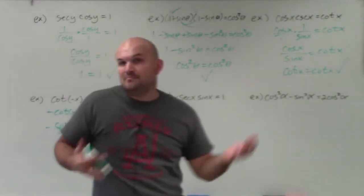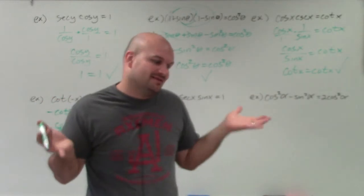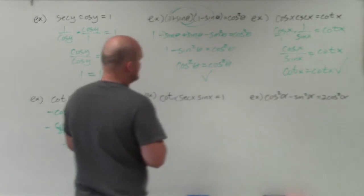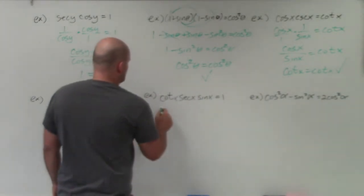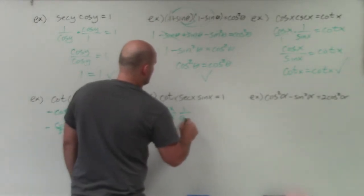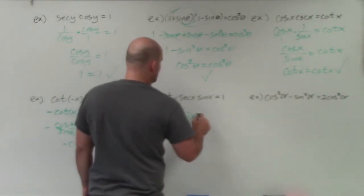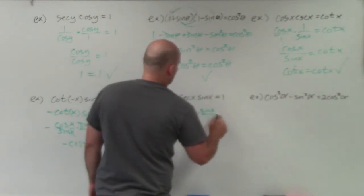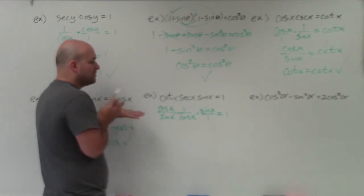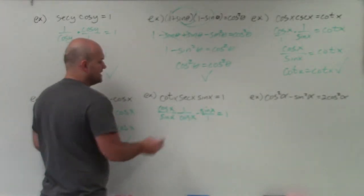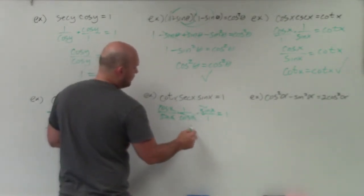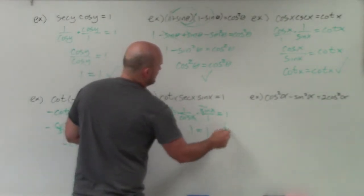In the next example, we have three terms — don't let that mess you up. Just rewrite all three in terms of sines and cosines. So we have cosine of x over sine of x, times 1 over cosine of x, times 1 over cosine of x, times sine of x over 1, equals 1. We simply divide out terms that are the same in the numerator and denominator. The cosines of x cancel, the sines of x cancel, and I'm left with 1 equals 1. Verified.